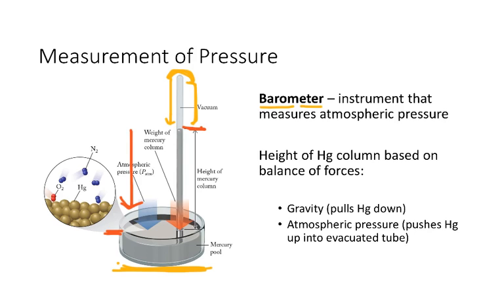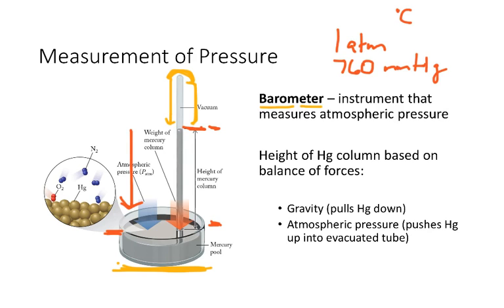So standard atmospheric pressure is what we call 1 atm, or 760 millimeters of mercury, which is what we would have here, assuming that this is under standard conditions. And those standard conditions are 0 degrees Celsius and sea level.